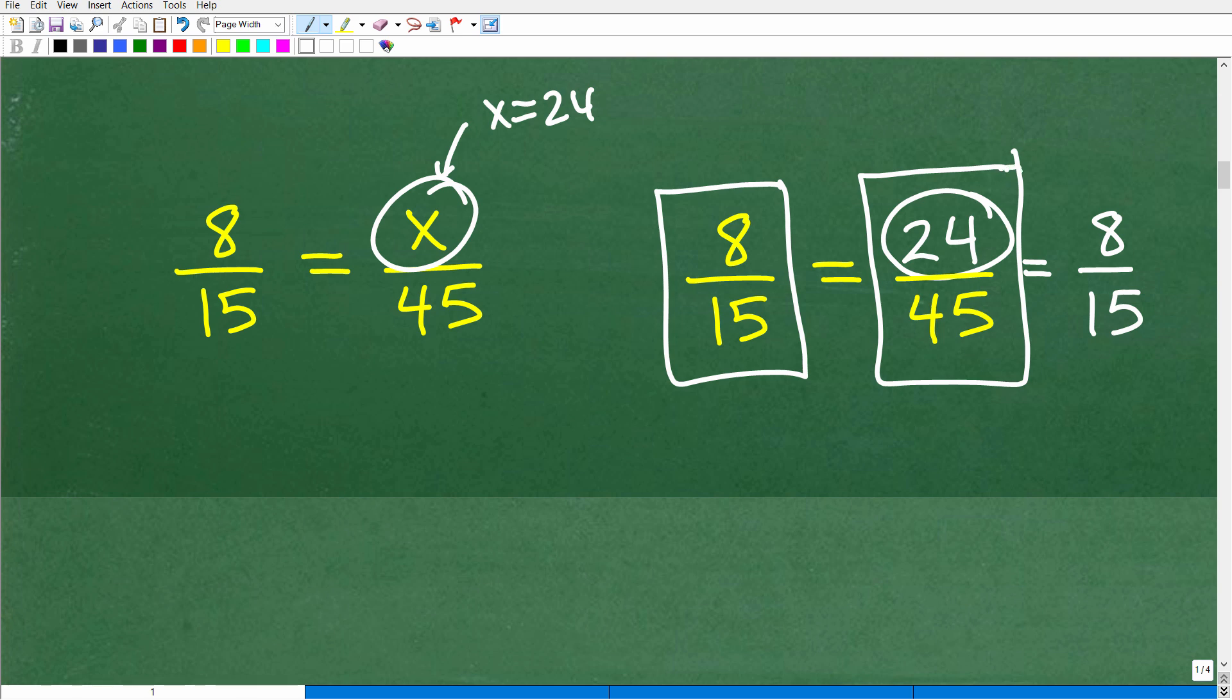Well, if you reduce this fraction, 24 over 45, three goes into 24 eight, and three goes into 45 fifteen. Well, look at the fraction we get, 8 fifteenths. That is the same as this left-hand side has an 8 fifteenths. And you could see the right-hand side is also 8 fifteenths. Another thing you could do is see that our cross products will be equal.